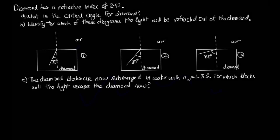Okay, so the question is, diamond has a refractive index of 2.42. Part A, what is the critical angle for diamond? Part B, identify for which of these diagrams the light will be refracted out of the diamond. And part C, the diamond blocks are now submerged in water with a refractive index of 1.33. For which blocks will the light escape the diamond now?